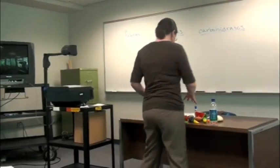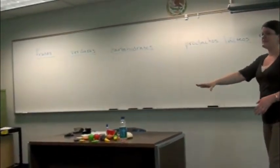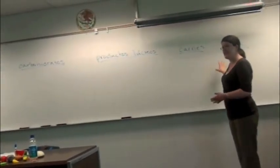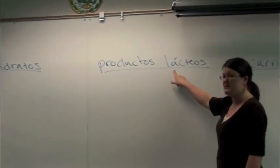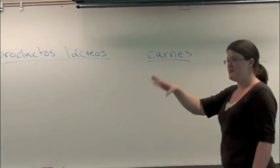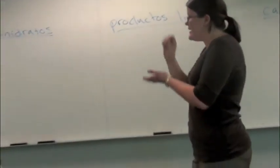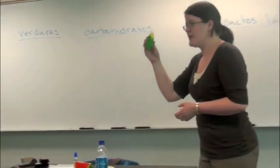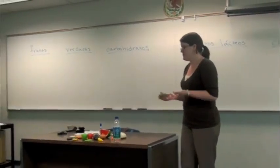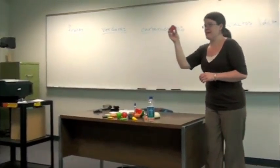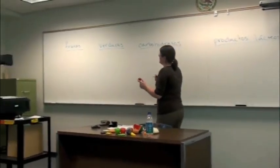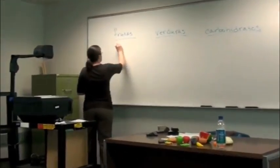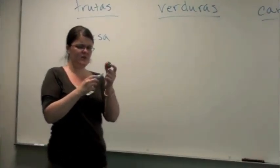Aquí tenemos algunos ejemplos, algunas comidas. Y vamos a dividir todas estas comidas en diferentes grupos. Aquí he escrito los grupos: frutas, verduras, carbohidratos, productos lácteos — productos que vienen de la leche — y carnes. Vamos a empezar con la fresa. ¿Qué tipo de comida es la fresa? Es una fruta. Y aquí vamos a escribir fresa. ¿Y de qué color es la fresa?